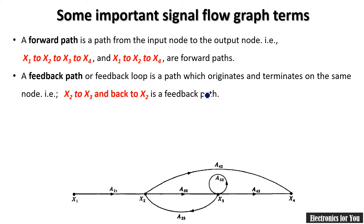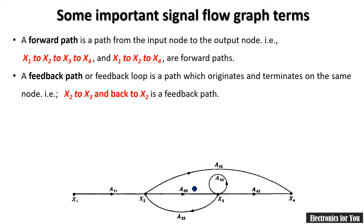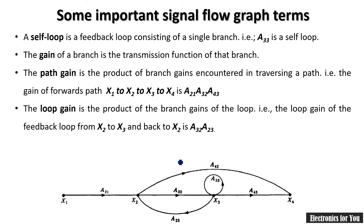A feedback path originates and terminates on the same node. For example, moving from x2 to x3 and back to x2 is your feedback path. One more concept is the self loop — a self loop starts and ends at the same point. So moving from x3 back to x3 itself with gain a33 is a self loop.